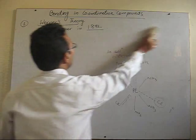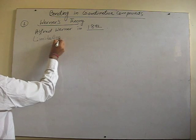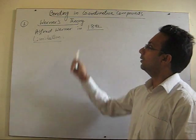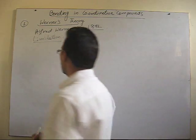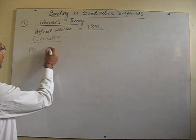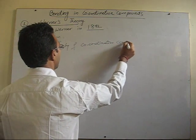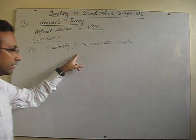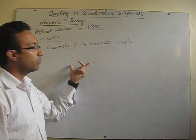Now we are going to discuss the limitations of Werner's theory. Because it is the starting point of structural elucidation for complex compounds, Werner gave very important points regarding two types of valencies of matter — primary valency and secondary valency. The first limitation is regarding the geometry of coordination compounds: when a specific number of ligands are attached to the central atom, why is there a definite shape? Why is the shape octahedral, tetrahedral, or square planar, depending on the number of ligands attached?